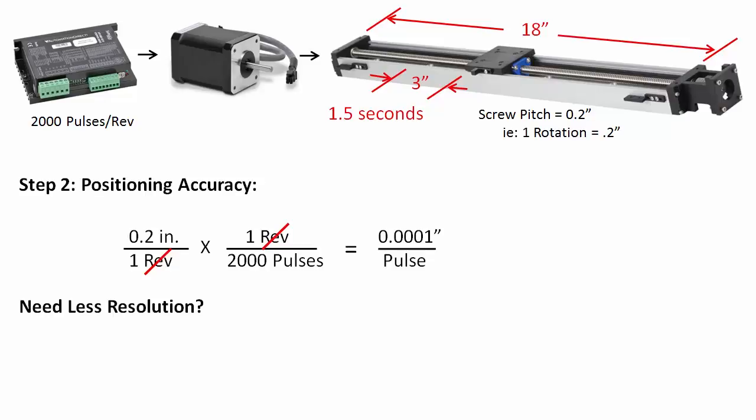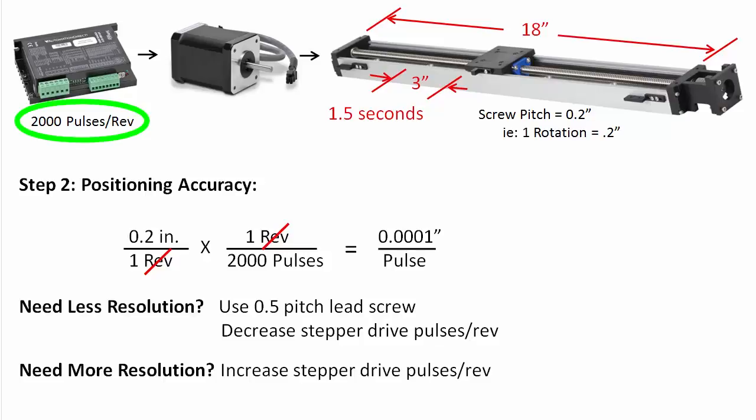If we don't need that much resolution, we could switch to a 0.5 pitch lead screw or we could simply reduce the number of pulses per revolution out of the drive. If we need more resolution, we could increase the pulses per revolution out of the drive. We'll use this 10,000th of an inch and move on to step 3.